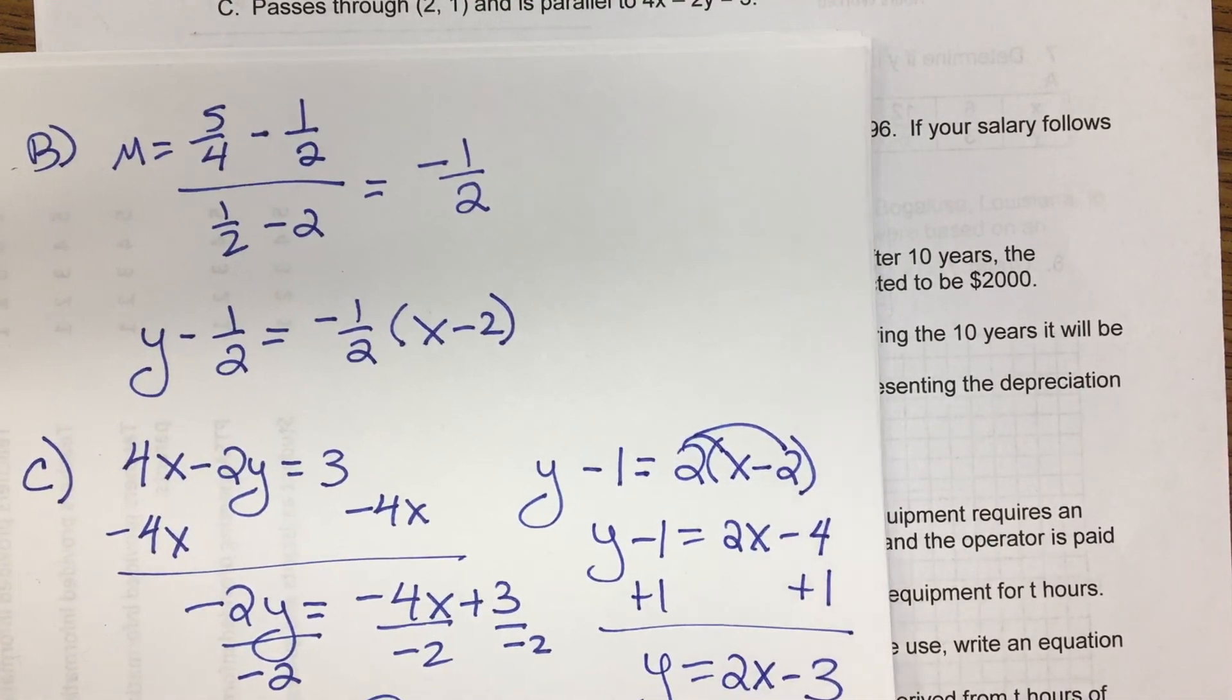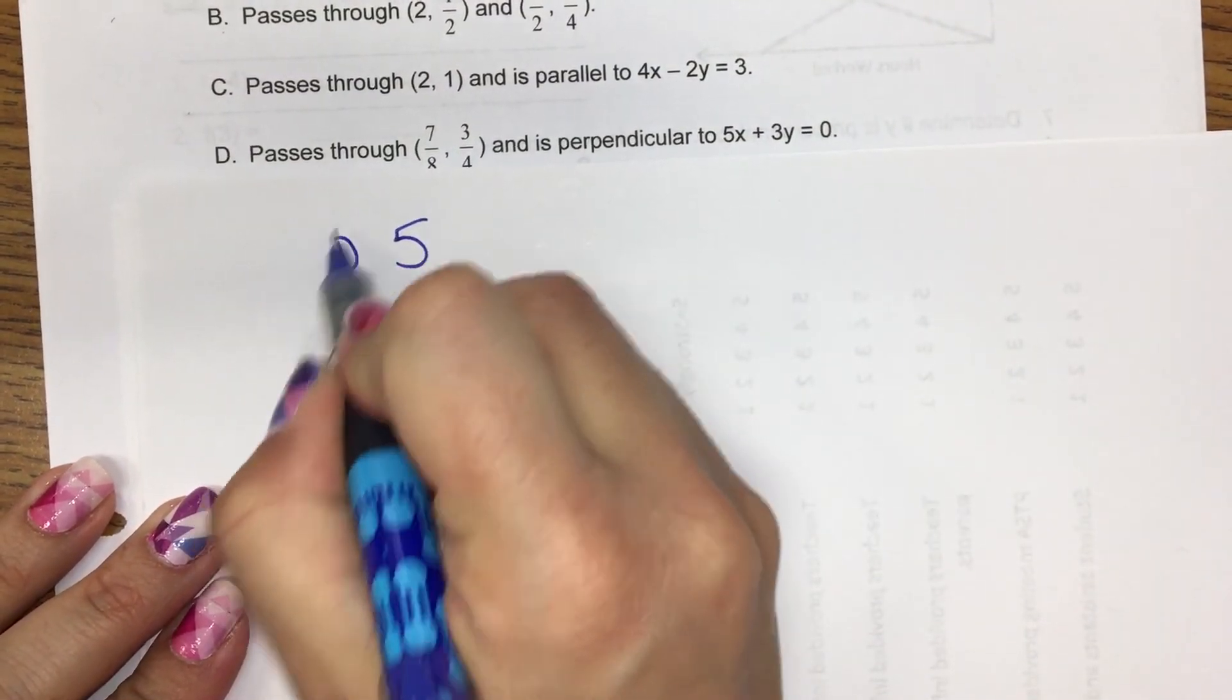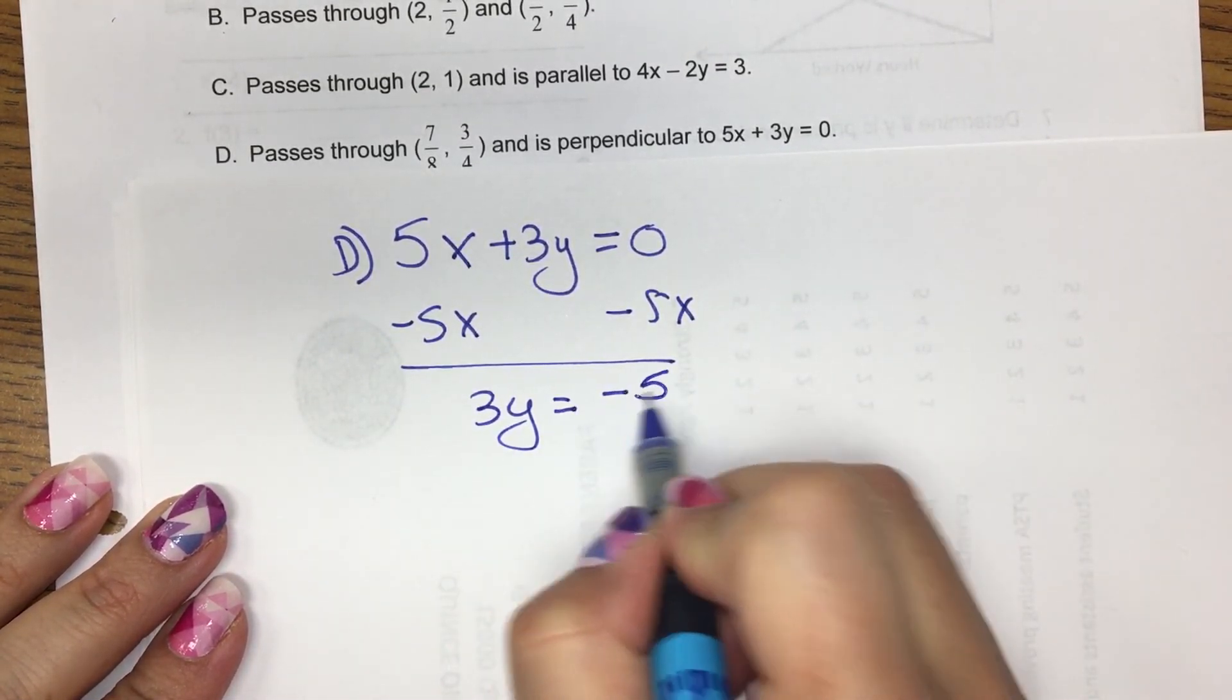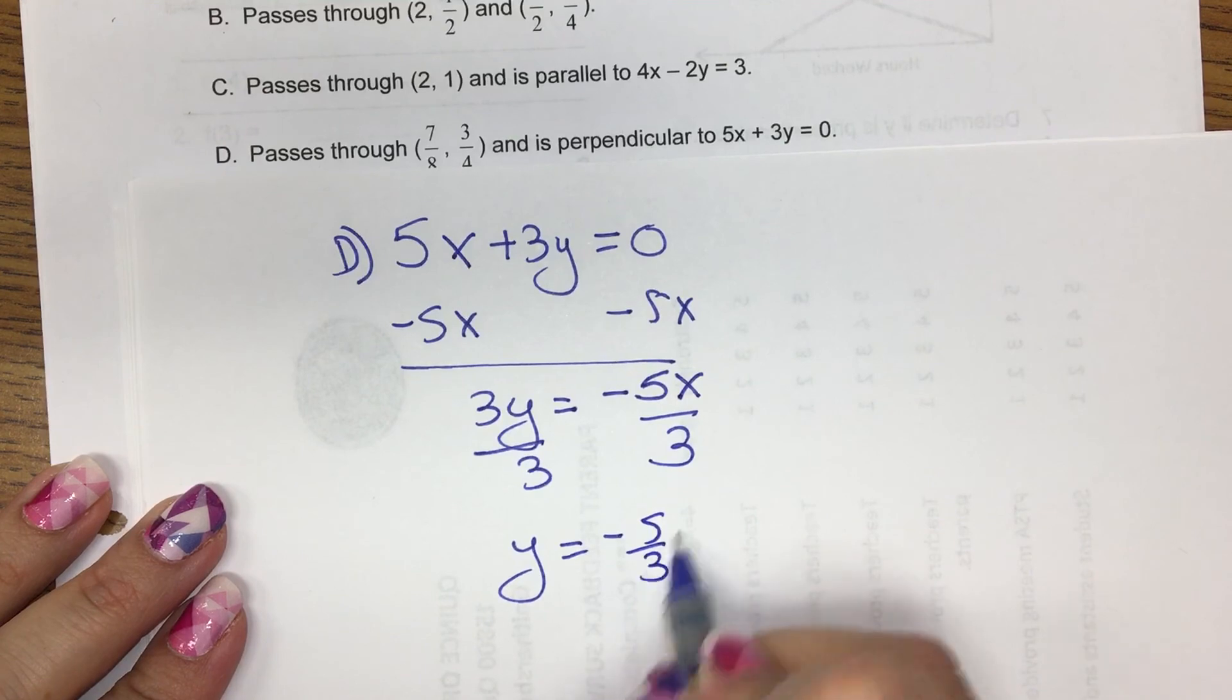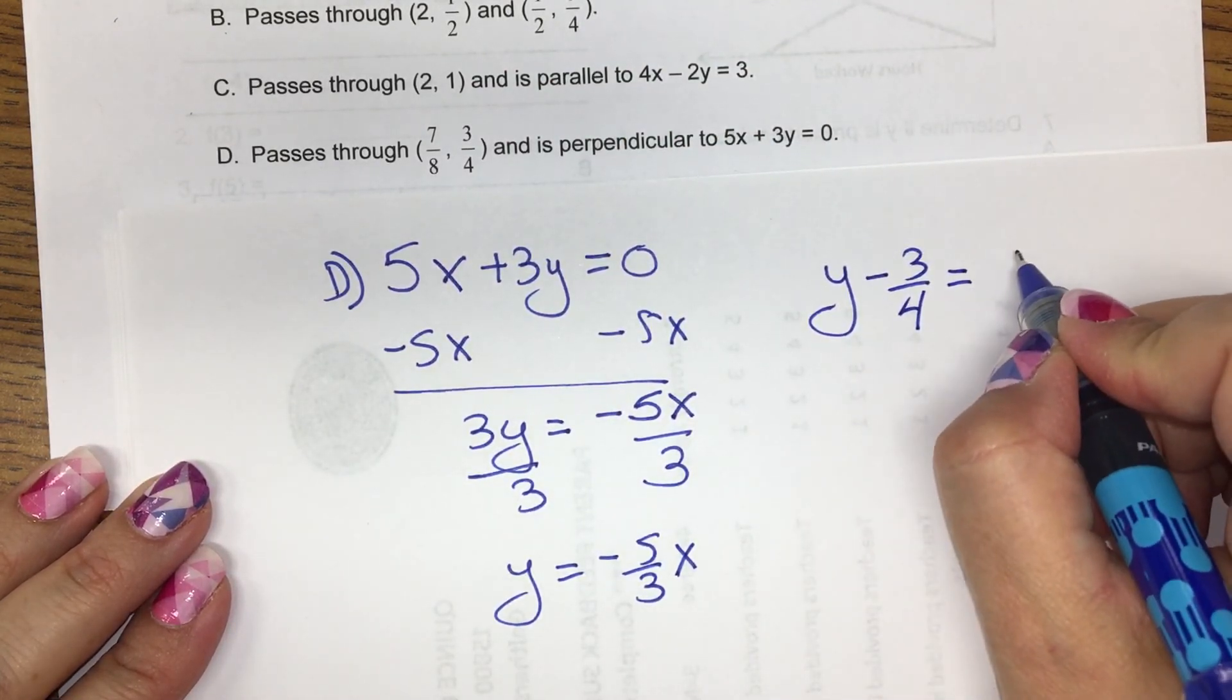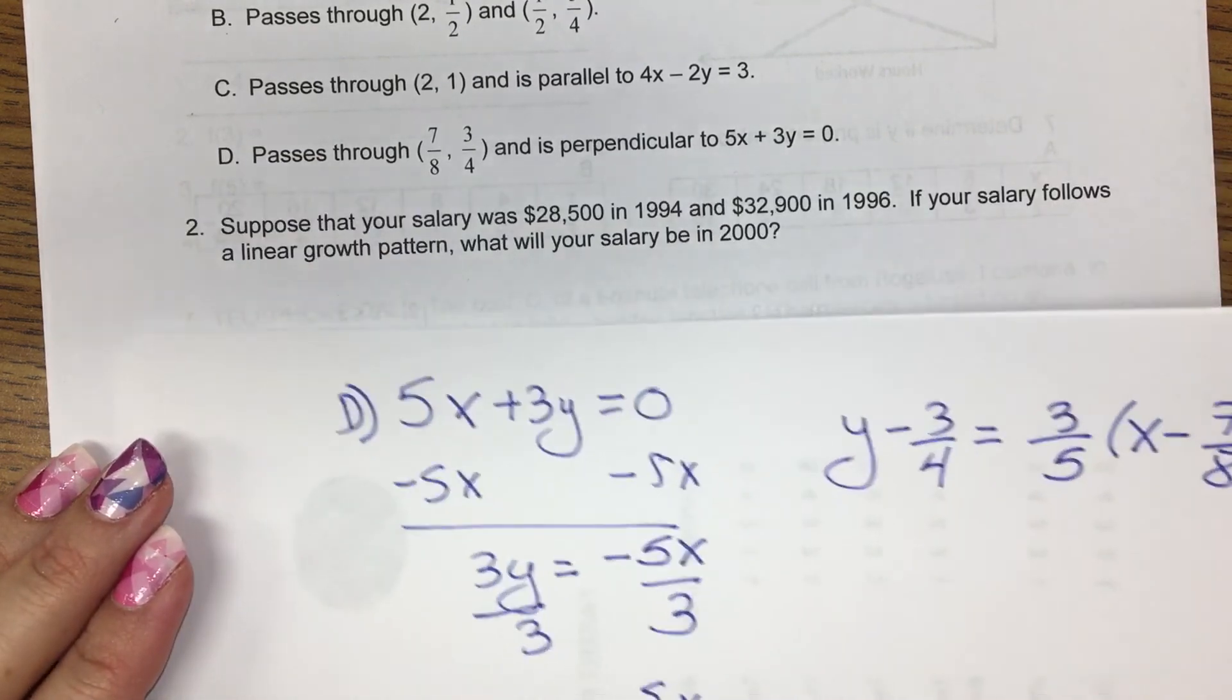And now let's do d. So the same thing for d. We first have to isolate y to figure out our slope. So I'm going to subtract the 5x. Divide by 3. So now when we go to write the equation, since it's perpendicular, we take the reciprocal and make it negative. And that is our point-slope form.